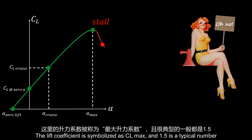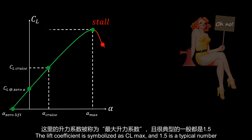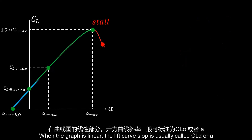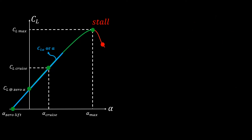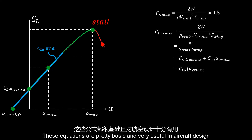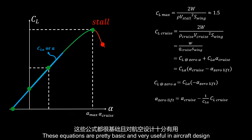The lift coefficient at stall is symbolized as CL max, and 1.5 is a typical number. When the graph is linear, the lift curve slope is usually called CL alpha or A. Here I list all the equations for every term — these equations are pretty basic and very useful in aircraft design.